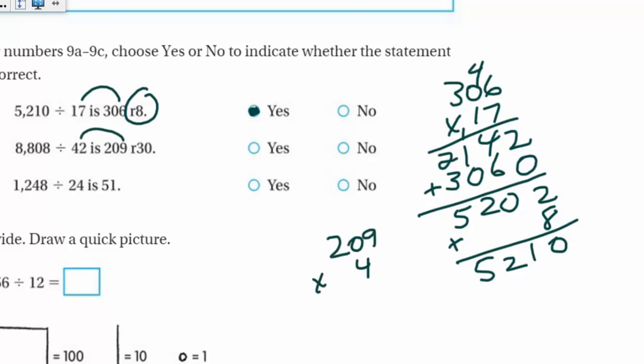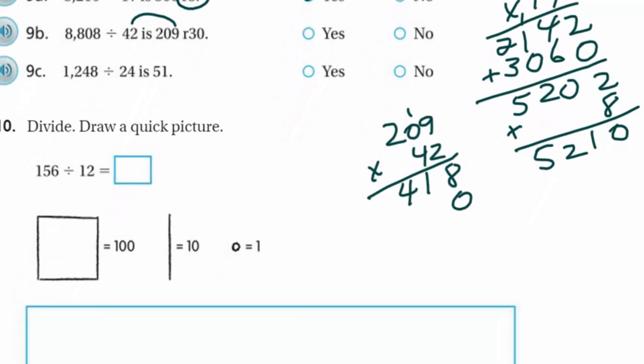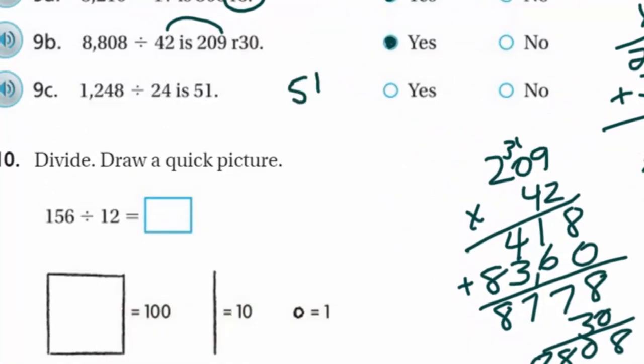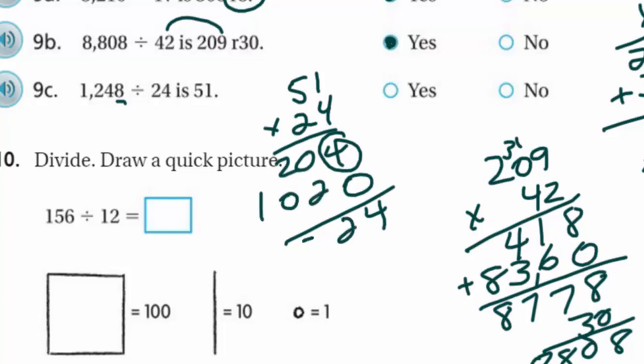Okay, so let's go on to the next problem here. It says for numbers 9A through 9C, just choose yes or no to indicate whether the statement is correct. We have 5,210 divided by 17 is 306 with the remainder 8. Okay, well, a couple of things we could do. First thing we'd want to do is you'd want to take that quotient and multiply it by the divisor. That might tell us right away. Okay, so I'll do my work right over here and multiply that by 17. Okay, placeholder. Now I have 6, 0, 3. I'm adding and it says 5,202. But looking at our remainder here of 8 would bring us to what we need, 5,210. Yes, this is true. All right, keep checking back on all of these. That's all we can do. 209 we're going to multiply that by 42.